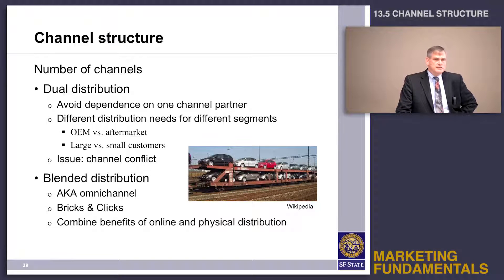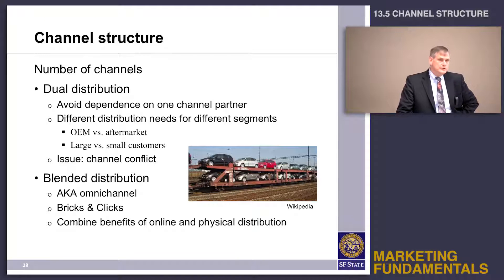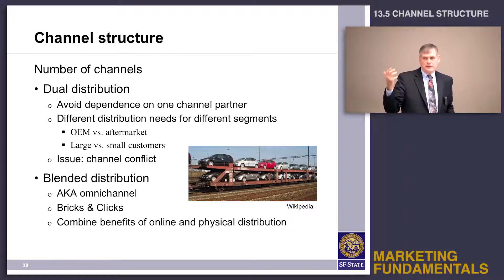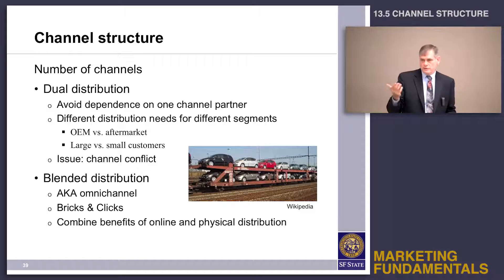One of the issues in channel structure is how many channels you should have. Dual distribution is where you have more than one channel of distribution for your product. The good news is it avoids dependence on one channel. The bad news is that if you have multiple distribution outlets, the channel partners in one channel might feel competition from the channel partners in the other channel and not be willing to give your product the support they might otherwise give it.